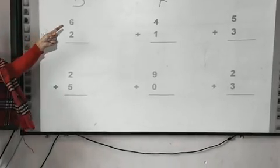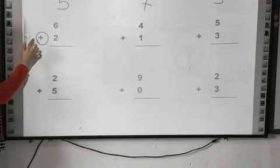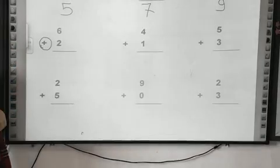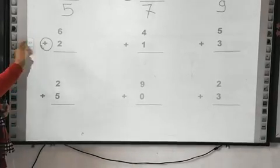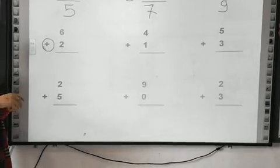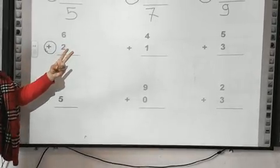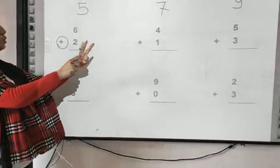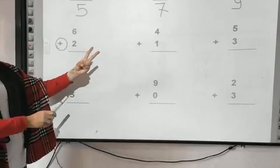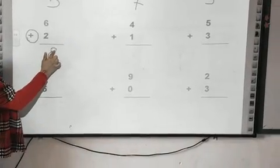Here we have 6 plus 2. Make a circle around plus to make sure it's a plus. Where is the greatest number — 6 or 2? Six. I will put 6 in my mind and 2 on my finger. Count after 6 — what comes after 6? Seven, eight. So I will write 8.